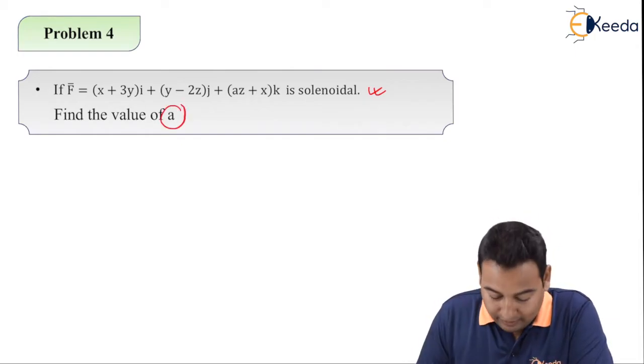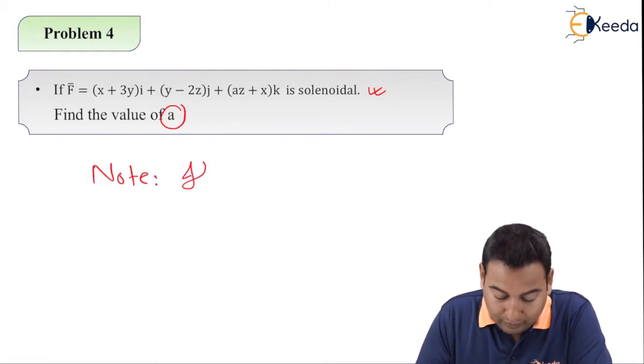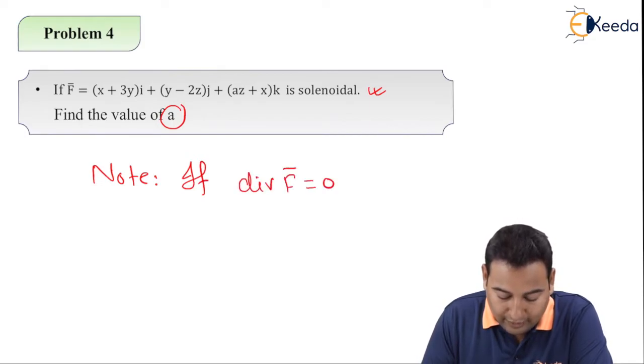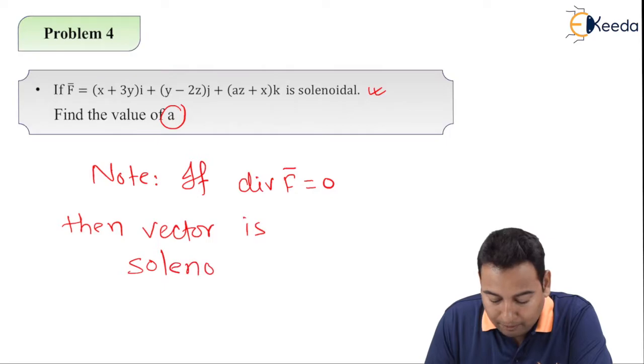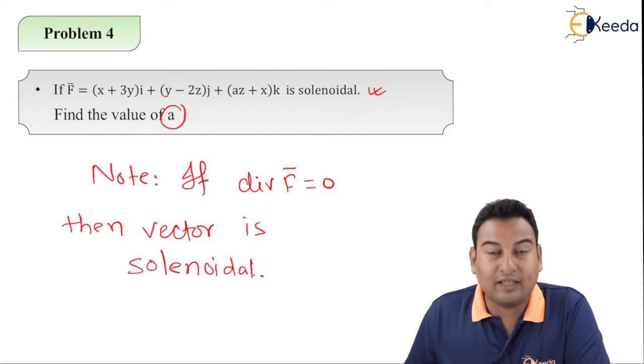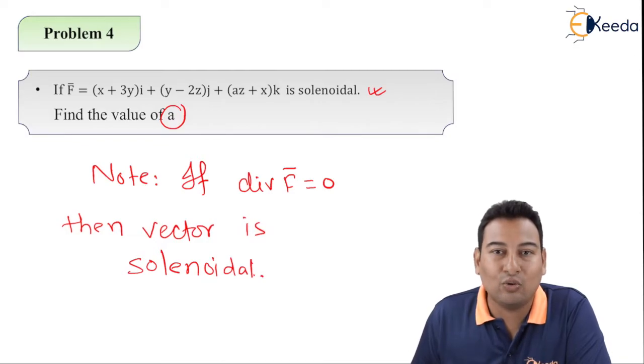Friends, you need to remember, it's very important, make a note of it. If divergence of F bar is equal to 0, then the vector is solenoidal. This point is very important. If you remember this, this problem is very simple. Vector is said to be solenoidal if divergence of F bar is equal to 0.